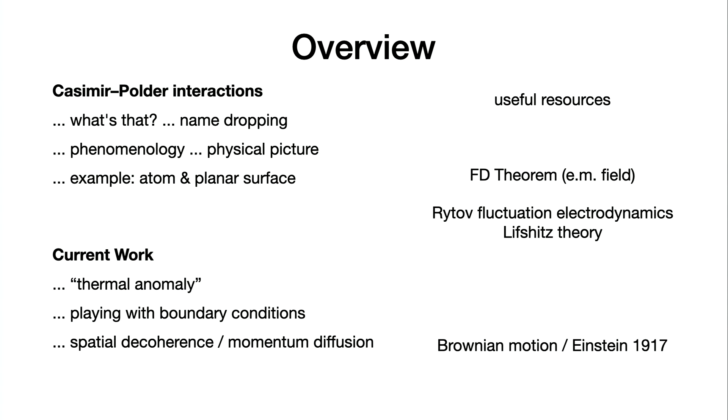If you need more resources from the theory side, Jacques already introduced this fluctuation dissipation theorem for the electromagnetic field. Rytov's fluctuation electrodynamics and theory by Lifshitz are also very useful. I will only touch very little on these. Einstein's paper 1917 on the quantum theory of radiation, I will discuss this as an application here. It's related to current work I'm doing with colleagues who try to do very fundamental and a bit crazy experiments with massive particles which are larger than atoms but still fairly small and explore the limits of quantum superpositions.